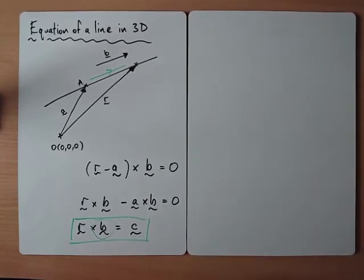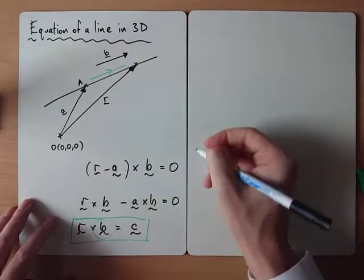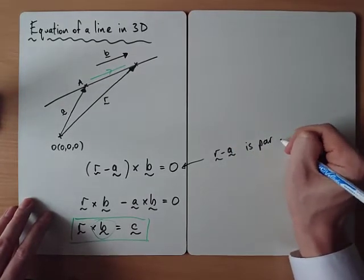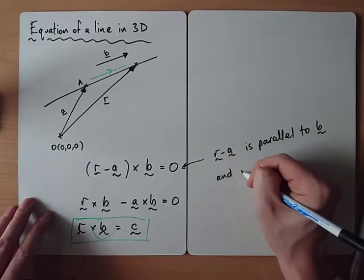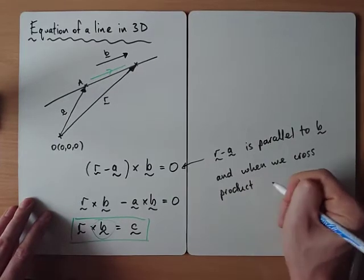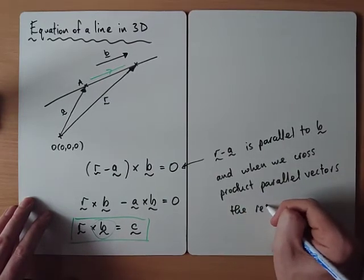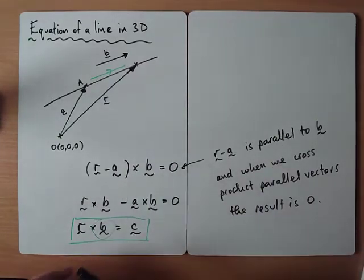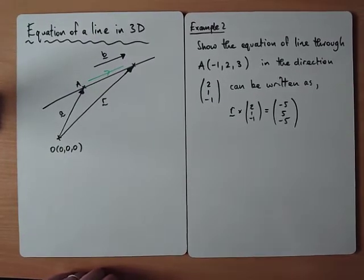So if you actually look at the example in the booklet, it says explain why R minus A cross B is a line. And this diagram explains why. I suppose if we were going to be asked to specifically explain, we could say that R minus A is parallel to B, and when we cross product parallel vectors, the results are zero. And it says show it can be written as this, which is what we've done there. So we've just done example one without me even realizing. I was just explaining the topic, but that's what initially we're asked to do.